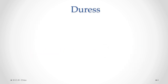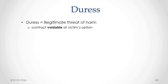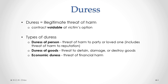Let's look at the contractual defect called duress. Duress is considered to be some kind of illegitimate threat of harm. If there is duress, a contract is considered to be voidable at the victim's option. There are three different types of duress. There is duress of person — that's threat of harm to a party or a loved one, including a threat of harm to reputation. Duress of goods is a threat to detain, damage, or destroy goods. And economic duress is a threat of financial harm.